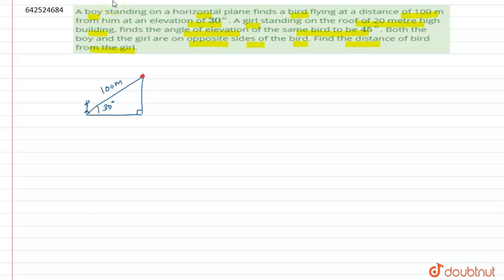Now the next information says that this same bird is observed by a girl which is standing on a 20 meter high building. So let us draw a 20 meter high building. The girl is standing here and observing the same bird and finds that the angle of elevation of this bird is 45 degrees. So let us make this figure complete.